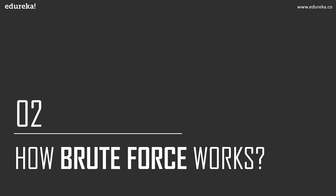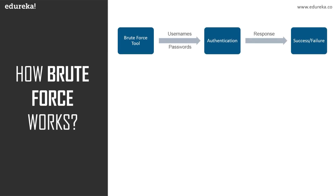Now let's see how brute force attack works. There is a flow diagram showing this. First, there's a brute force tool to which you feed usernames and passwords — maybe one username and a list of passwords, or a list of usernames and a list of passwords. This tool sends those combinations to the web application, where the username and password are authenticated. Depending on the response, the tool decides whether the credentials were right or wrong. If login was successful, the credentials are considered right; if it was a failure, that combination is considered wrong.